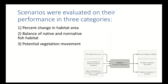Scenarios were evaluated on their performance in three categories: percent change in habitat area, the balance of native and non-native fish habitat, and the potential for vegetation movement. Scenario comparison was done in the last module of the DSS.